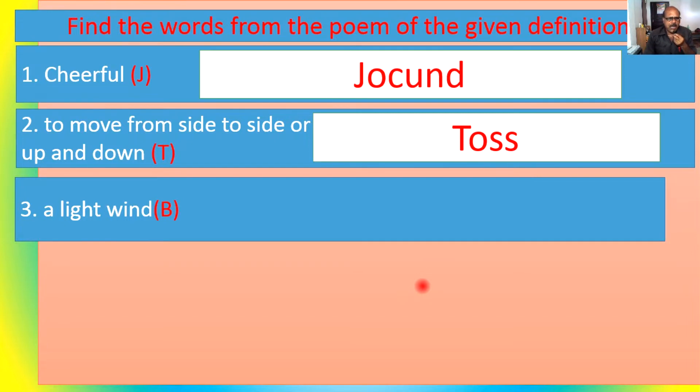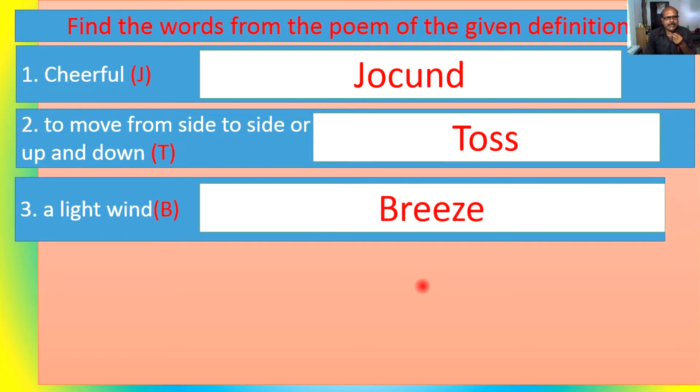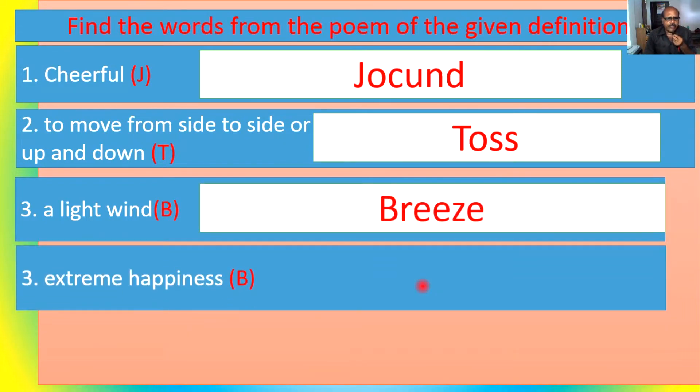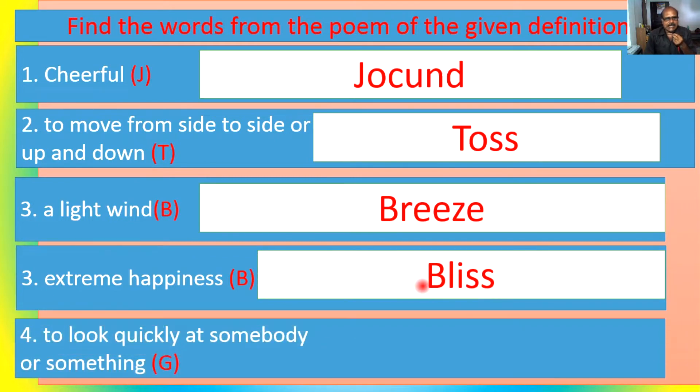That's why toss. And a light wind that starts with B. Can you guess that light wind? Yes, B-R-E-E-Z-E, breeze. And extreme happiness that starts also B. Can you guess what word you studied in the poem that starts from B? Yes, B-L-I-S-S, bliss.